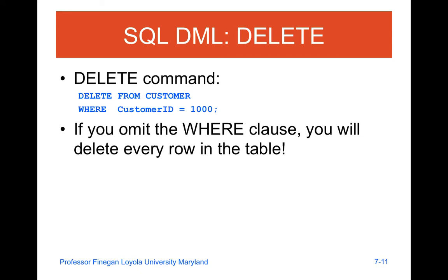Another good example of DML would be the DELETE command: DELETE FROM customer WHERE customer ID equals 1000. The key here is making sure you have a WHERE clause. If you don't have a WHERE clause, you will delete every row in your table. Make sure you are aware of that — without the WHERE clause, you will delete every row in the table.